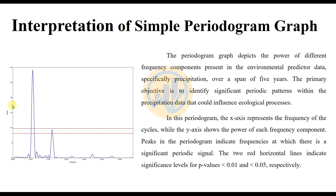The peaks in the periodogram indicate frequencies at which there is a significant periodic signal. The two horizontal red lines indicate the significance levels: P less than 0.01 and P less than 0.05, respectively. The first line corresponds to P less than 0.05 and the second line corresponds to P less than 0.01.